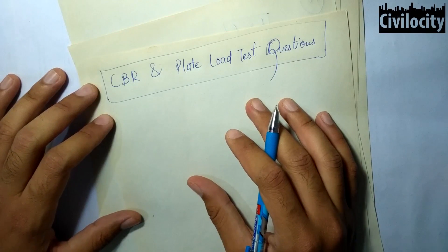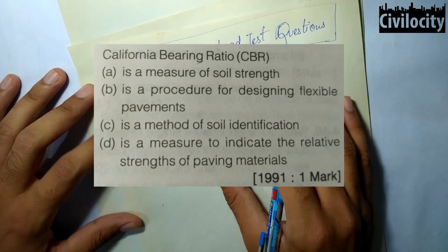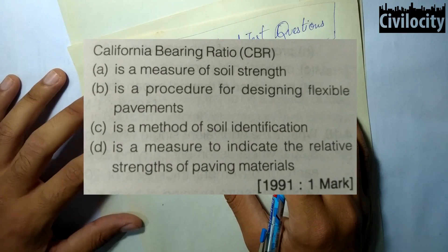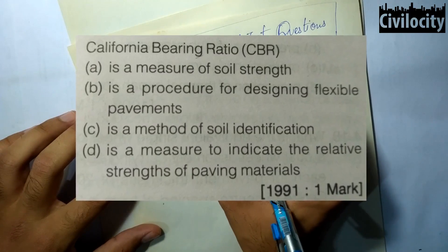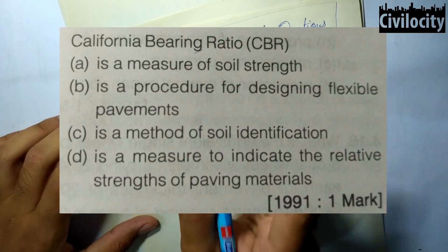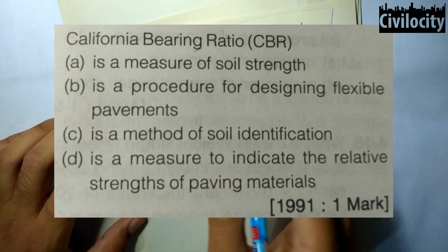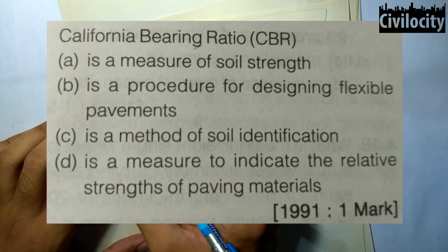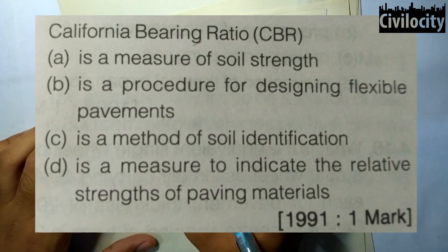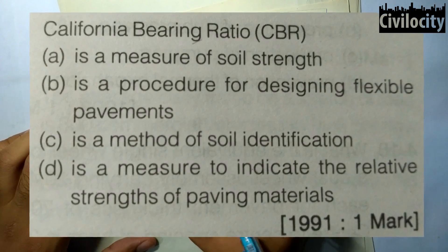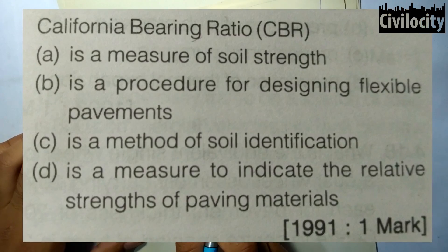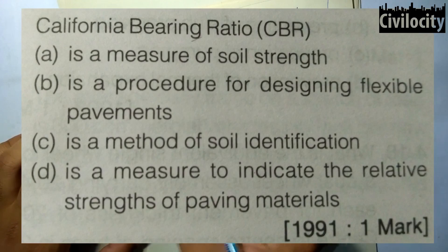The first question asks: California Bearing Ratio CBR is — a measure of soil strength, a procedure of designing flexible pavements, a method of soil identification, or a measure to identify the relative strength of paving materials. Recalling our CBR test, it was developed for evaluating the strength of sub-grade soil and other pavement materials for the design and construction of flexible pavements. Among the four options, the fourth option is correct: CBR is a measure to indicate the relative strength of paving materials.